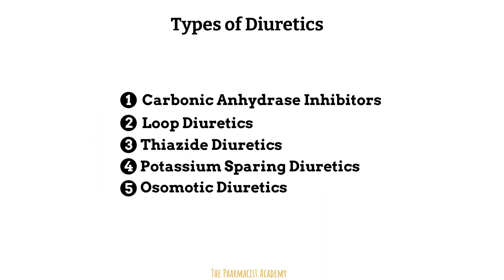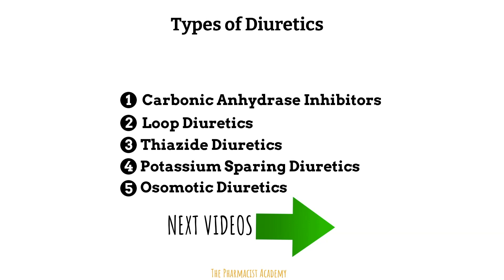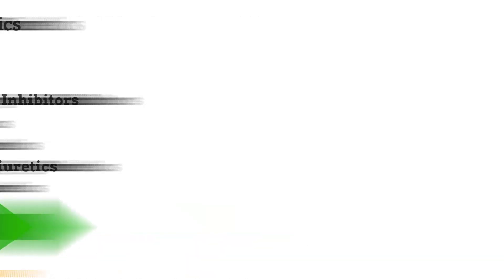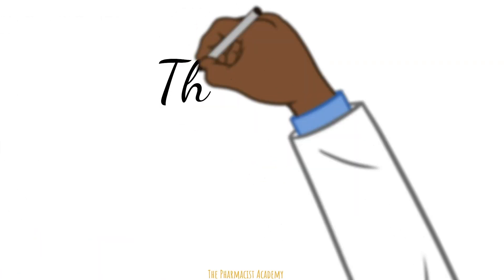There are five main classes of diuretics. In the next video, I'll be discussing the mechanism of action more in depth. This will help you understand how diuretics work in the different parts of the tubules to achieve their effects. Next videos will also include side effects, indications, pharmacology, and more, so make sure to turn your notifications on for the alerts. Thank you for watching this video.